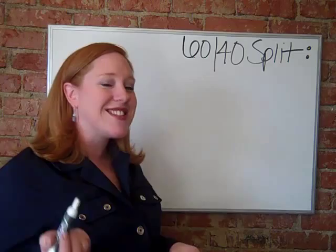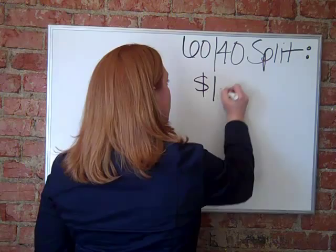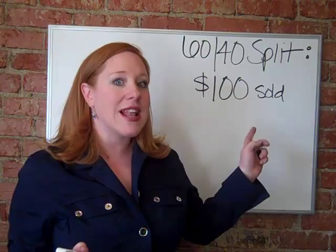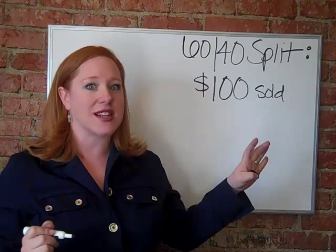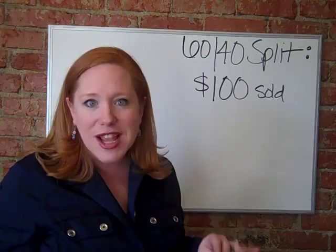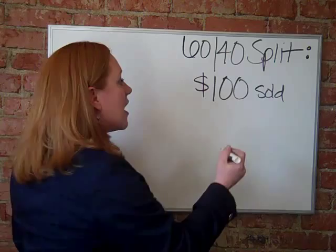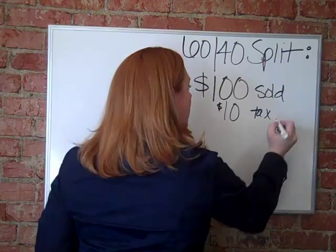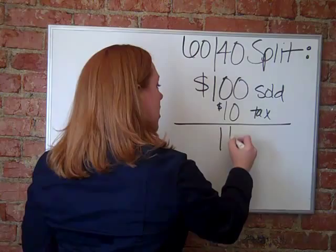So we're going to do an example. Let's say that you have a customer that you sold $100 worth of product to. Now, in order to get that $100 off your shelf, you also charged her retail sales tax. For simplicity's sake, I'm going to use a 10% tax rate because I can do easy math that way. I know many of you have 9% or 8% — we're going to do 10%. So if we charge this customer 10% tax, that means I need to take an additional $10 for tax, which means my entire sales ticket is actually $110.